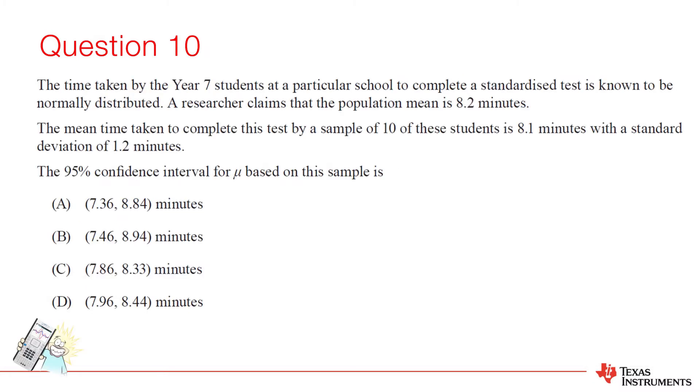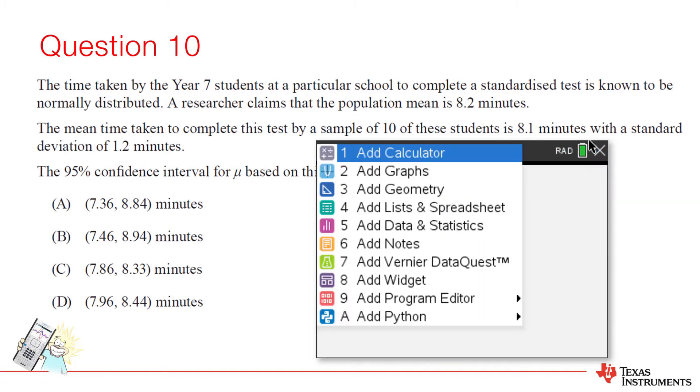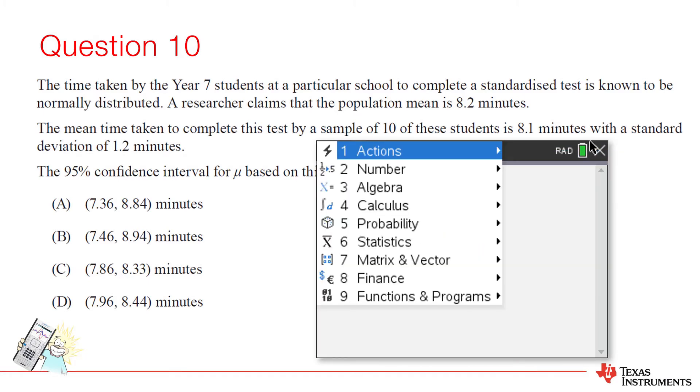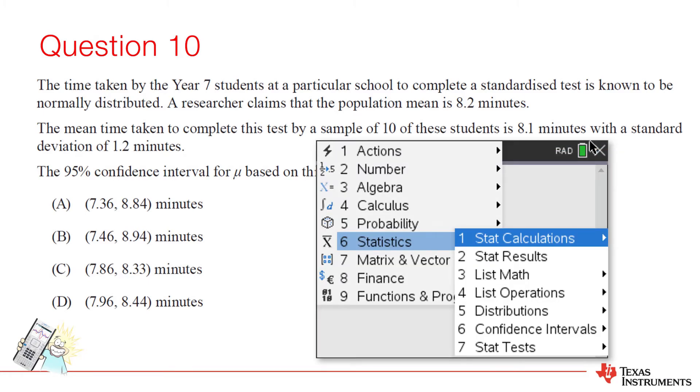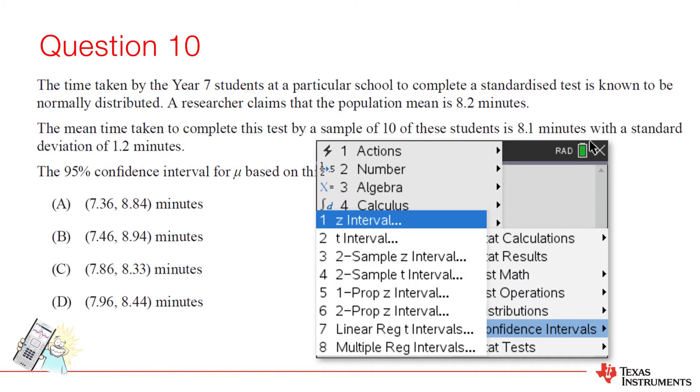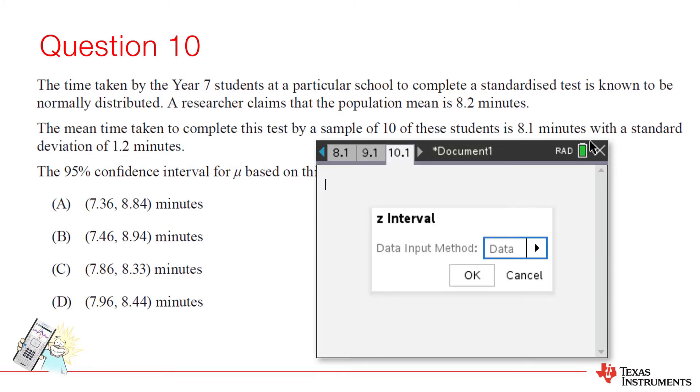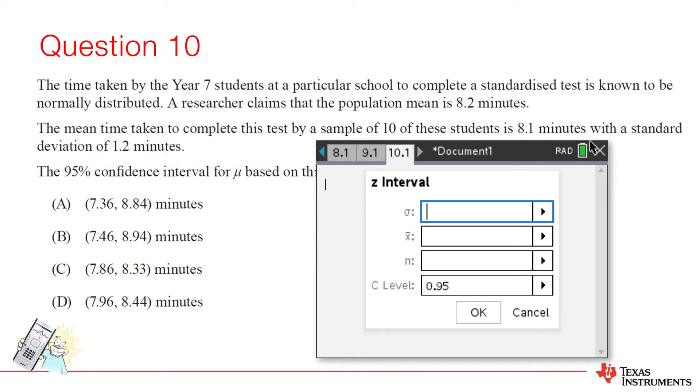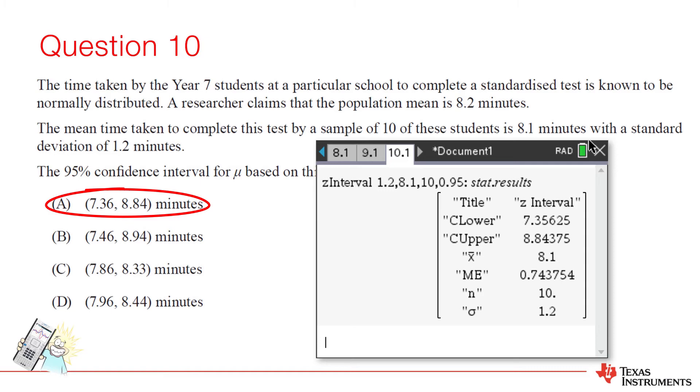This is a straightforward question with or without the calculator. A 95% confidence interval aligns to two standard deviations from the mean. The calculator can calculate z intervals. Note that we use the mean from our sample. We are creating a 95% confidence interval for the population mean. So the answer is option A.